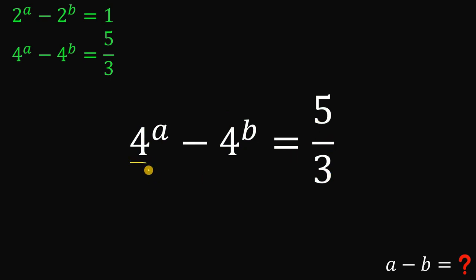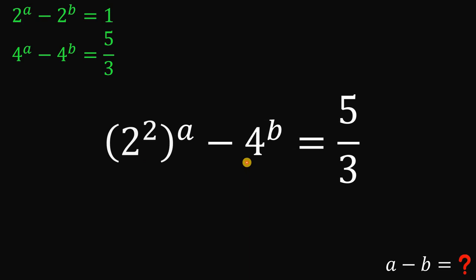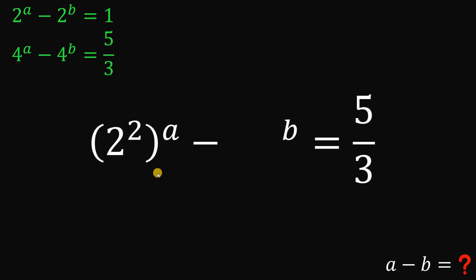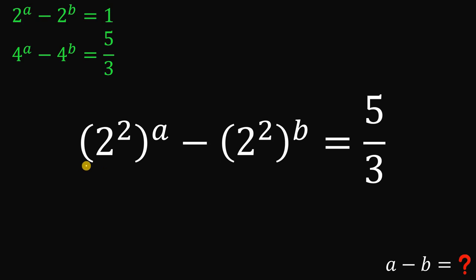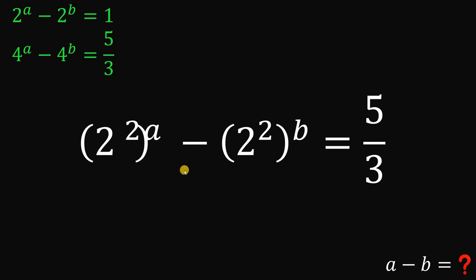Now, we know 4 is 2 raised to the power of 2, so we can replace this 4 as 2 raised to the power of 2. Also, we have another 4 here, so we can replace it with 2 raised to the power of 2. Then, this expression — 2 raised to the power of 2, raised to the power of a — we can rewrite this as 2 raised to the power of a, raised to the power of 2.